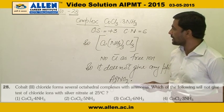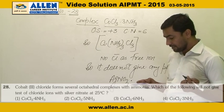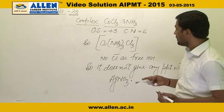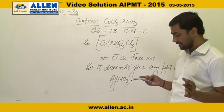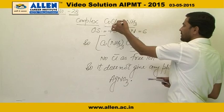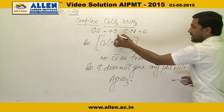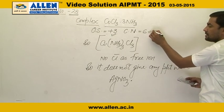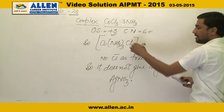Question number 28 is on coordination chemistry. A trivalent metal ion, M plus three, if the coordination number is 6, then 3 ammonia and 3 Cl as ligands form the complex.